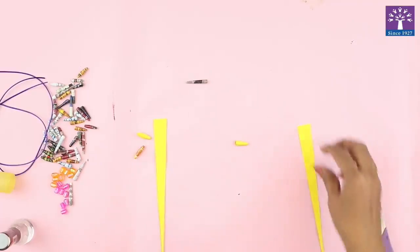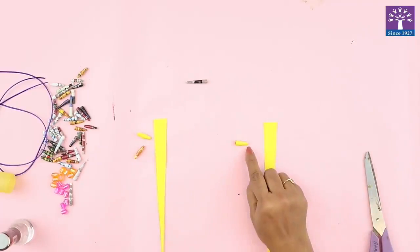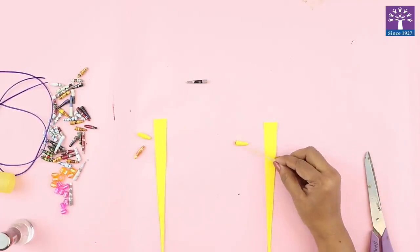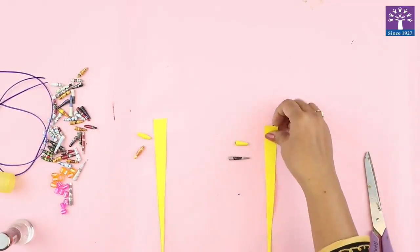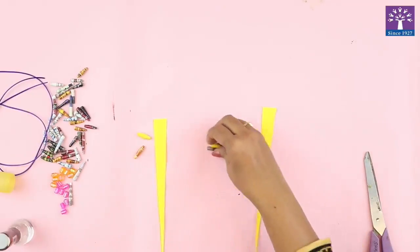And here we got a cone shape. See this is tapering at one side. If you see, this side is tapering. So we are using these shapes.